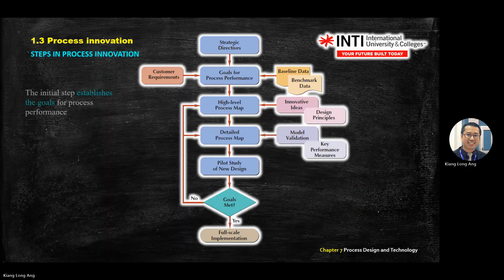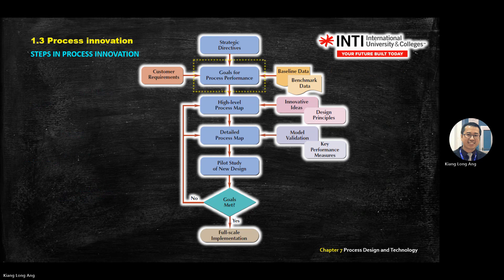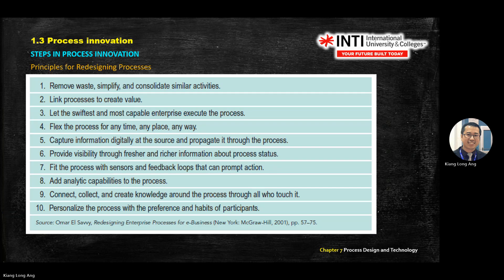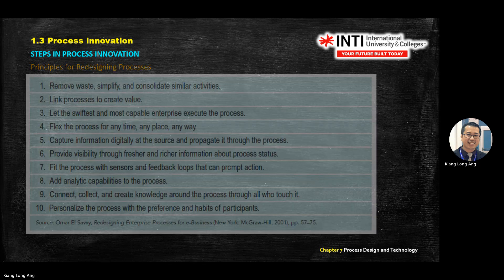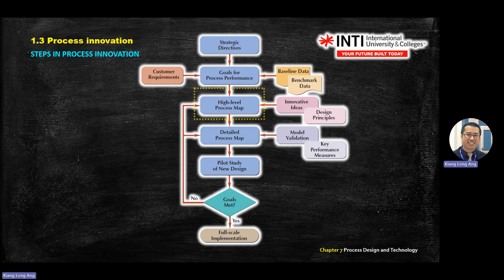Process innovation is also known as business process re-engineering (BPR), process redesign or restructuring. There are steps for process innovation — from strategy and goal-setting onward — and 10 principles of process innovation, which include five stages leading to full-scale implementation.